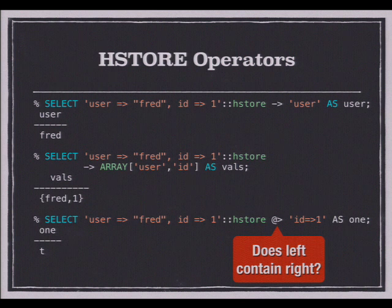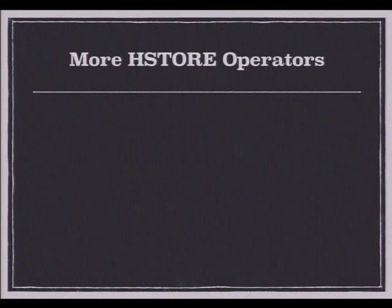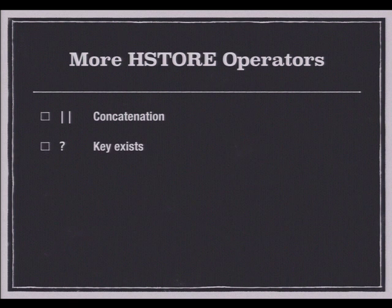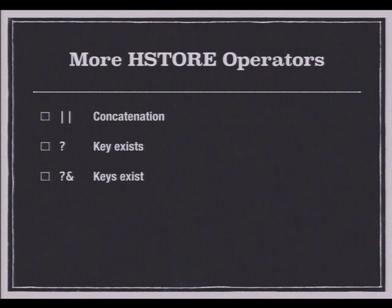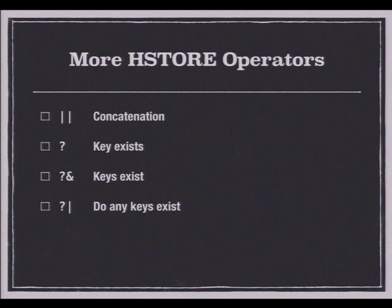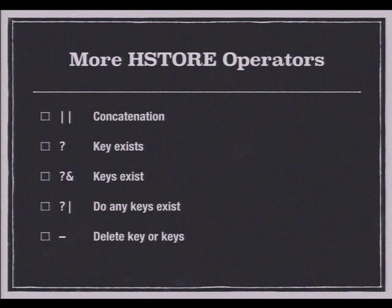Among the many operators supported by HStore is the concatenation operator, the key-exists operator which returns a Boolean, the keys-exist operator which returns true if all keys in the passed array exist in the HStore, and the any-key-exists operator which returns true if any of the keys in that array exist. You can also delete a key or array of keys from an HStore by passing a text or array of text to that operator.